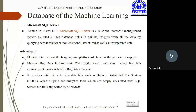The sixth one is Microsoft SQL Server, written in C and C++. It is a relational database management system (RDBMS). This database helps in gaining insights from all types of data by querying across relational, non-relational, structured, as well as unstructured data. Relational means data through which you can find a relationship; non-relational means you cannot find a relationship. Structured has a defined way of putting data and unstructured has an undefined way. So all four types of data can be applied through Microsoft SQL Server.